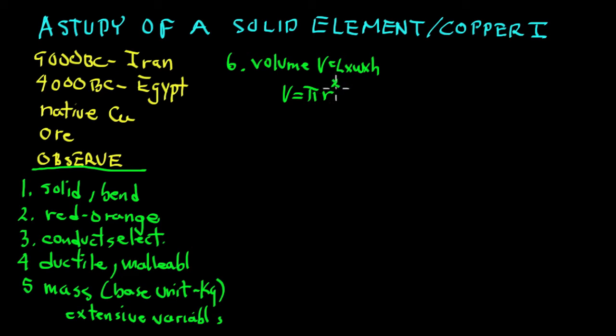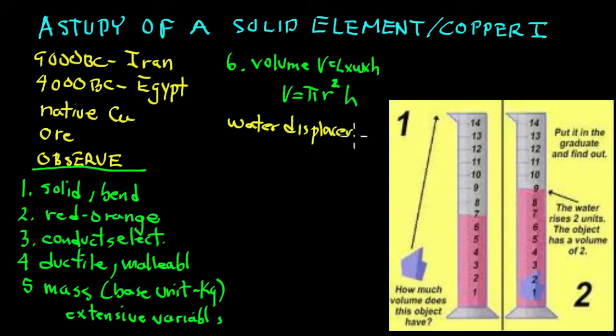Pi r squared is the base area times the height, the volume of the cylinder. But frequently, we get the volume using what's called water displacement. Water displacement. It's a great technique.